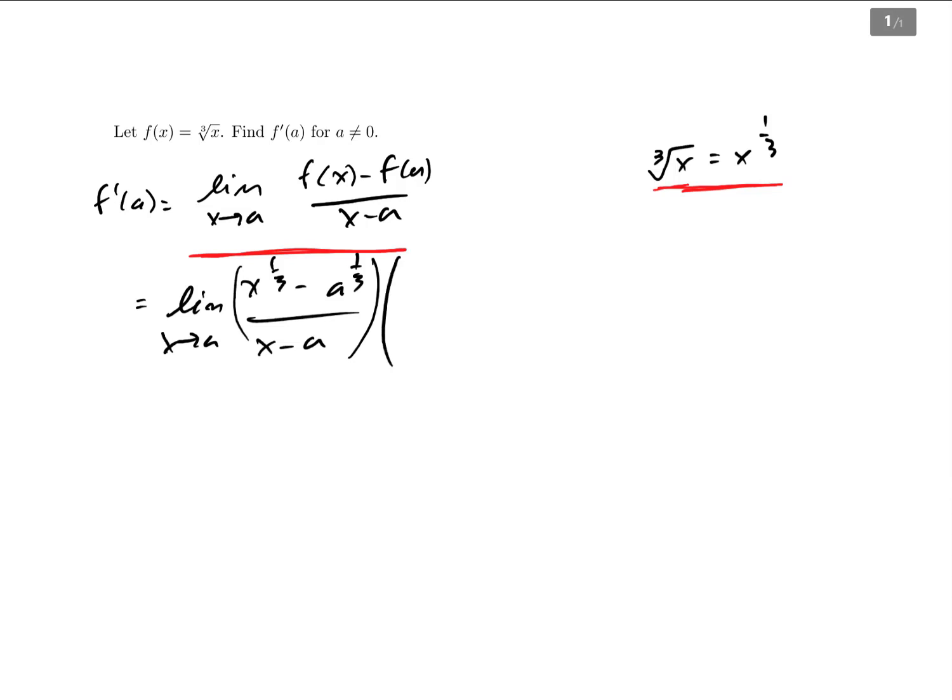So what we'll do is a clever trick that's not quite obvious, unless you know how to factor out the difference of cubes, which you could do here. But what I'm going to do is multiply the top and the bottom by x to the two thirds plus x to the one third, a to the one third, plus a to the two thirds.